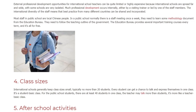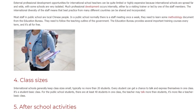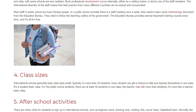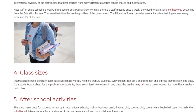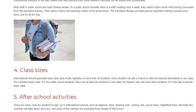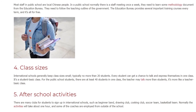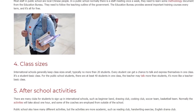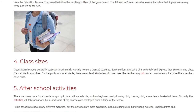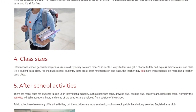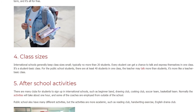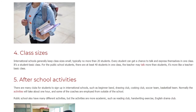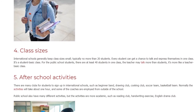4. Class sizes. International schools generally keep class sizes small, typically no more than 20 students. Every student gets a chance to talk and express themselves in class — it's more student-centered. For public school students, there are at least 40 students in one class. The teacher may talk more than students, making it more teacher-centered.